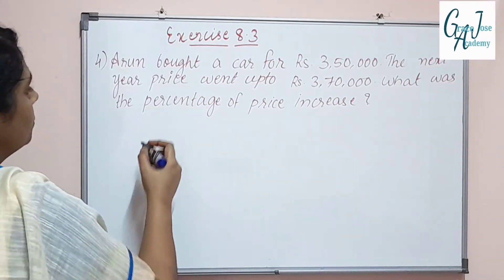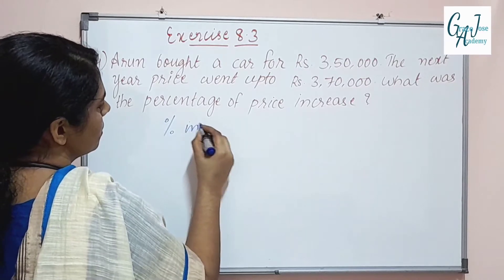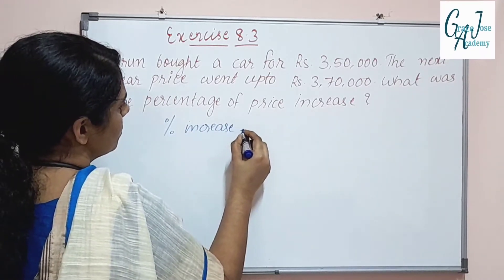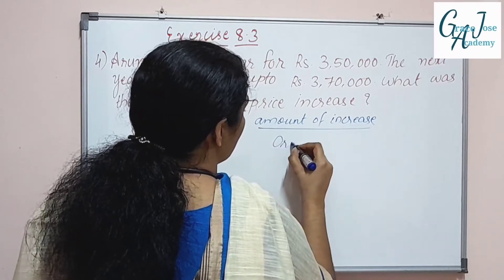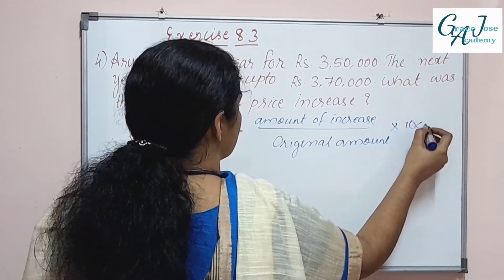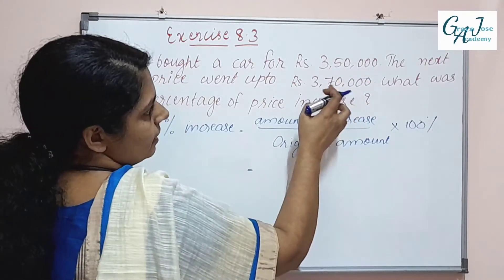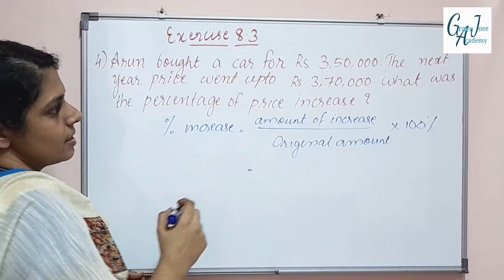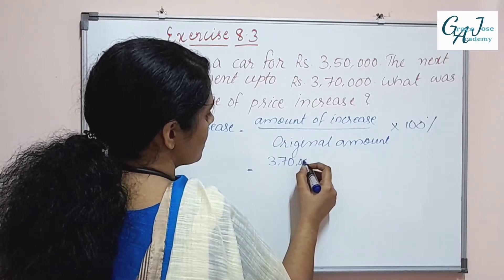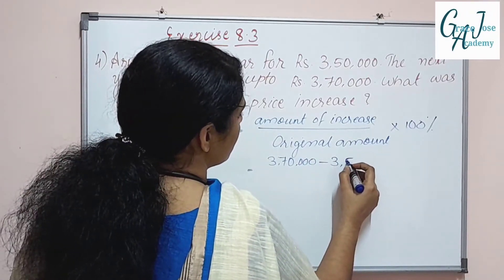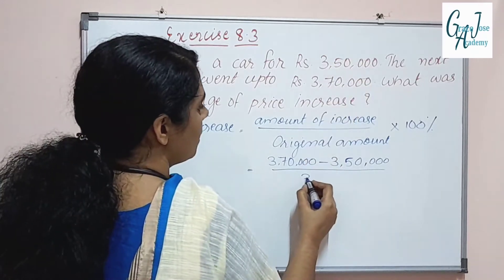Percentage increase formula: percentage increase is equal to amount of increase divided by original amount, into 100%. The original amount is Rs. 3,50,000 and the increase is Rs. 3,70,000 minus Rs. 3,50,000.